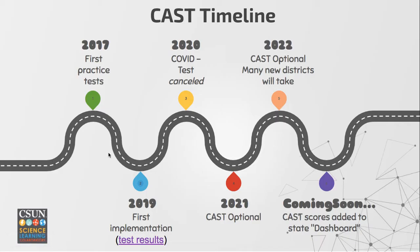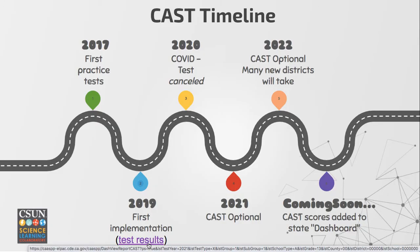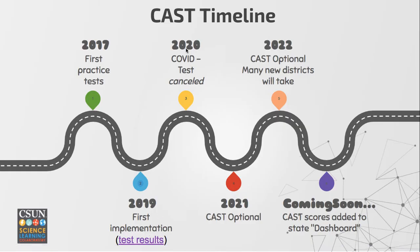We've actually been on the road to this science test for quite some time. Back in 2017, the first practice tests came out for the CAST, and it was first implemented just once back in 2019. You can actually go online and get the test results by clicking on the link, and we'll put the link in the YouTube video as well. In 2020 the test was of course canceled for COVID.